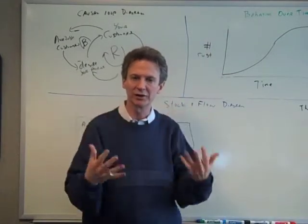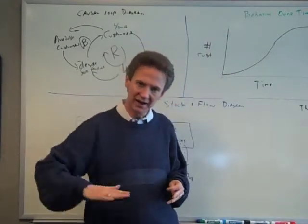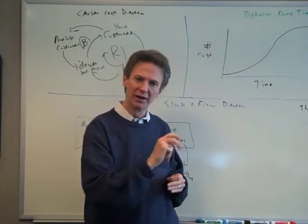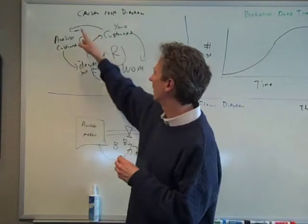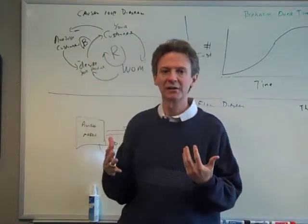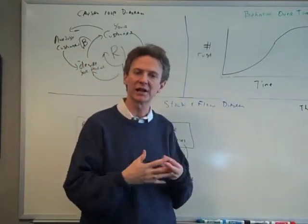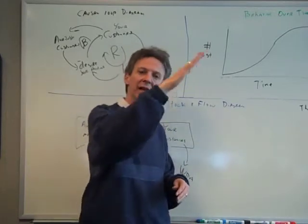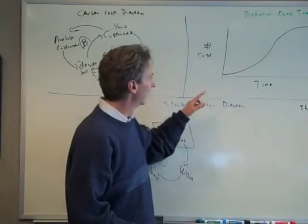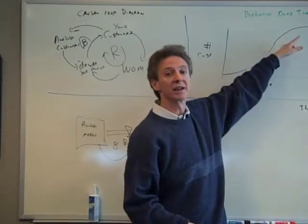There are certain things that drive growth, and in our model we used word of mouth driving growth. More people talking about your product encourages more buying. So that drives up growth, and then usually something will slow it down. In our case, we model market saturation, so as you sell more, the number of available customers remaining decreases. So you have something that drives it up and something that slows it down, and eventually your growth curve looks like an S.